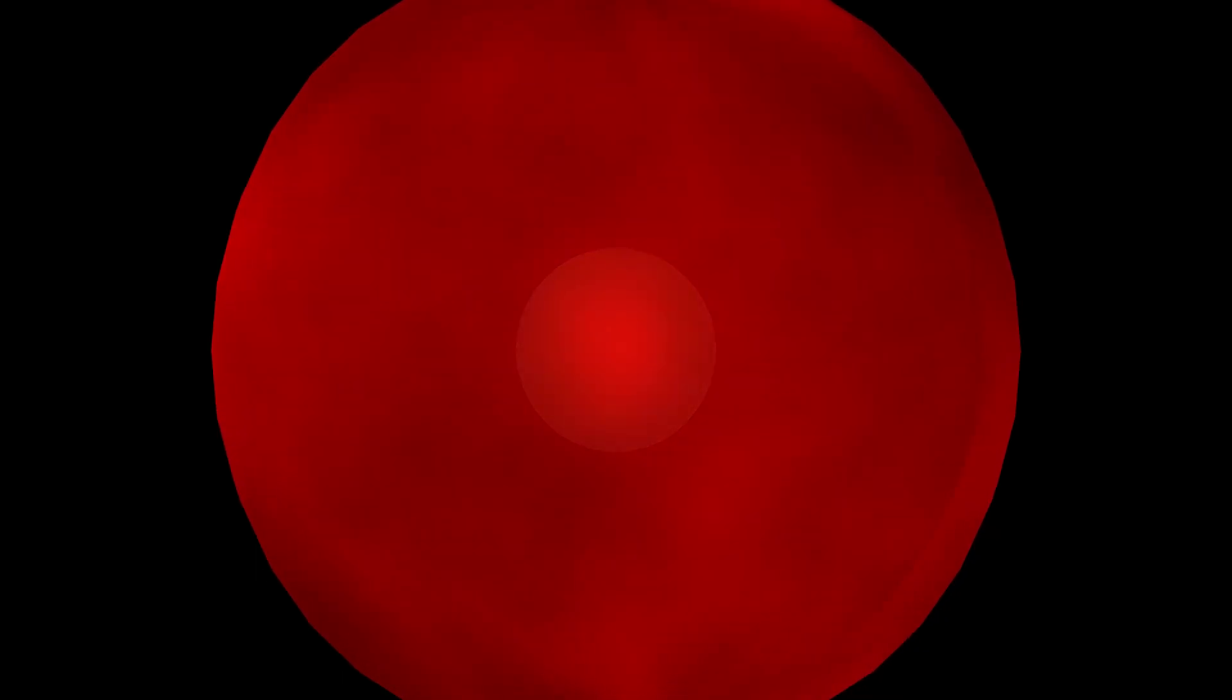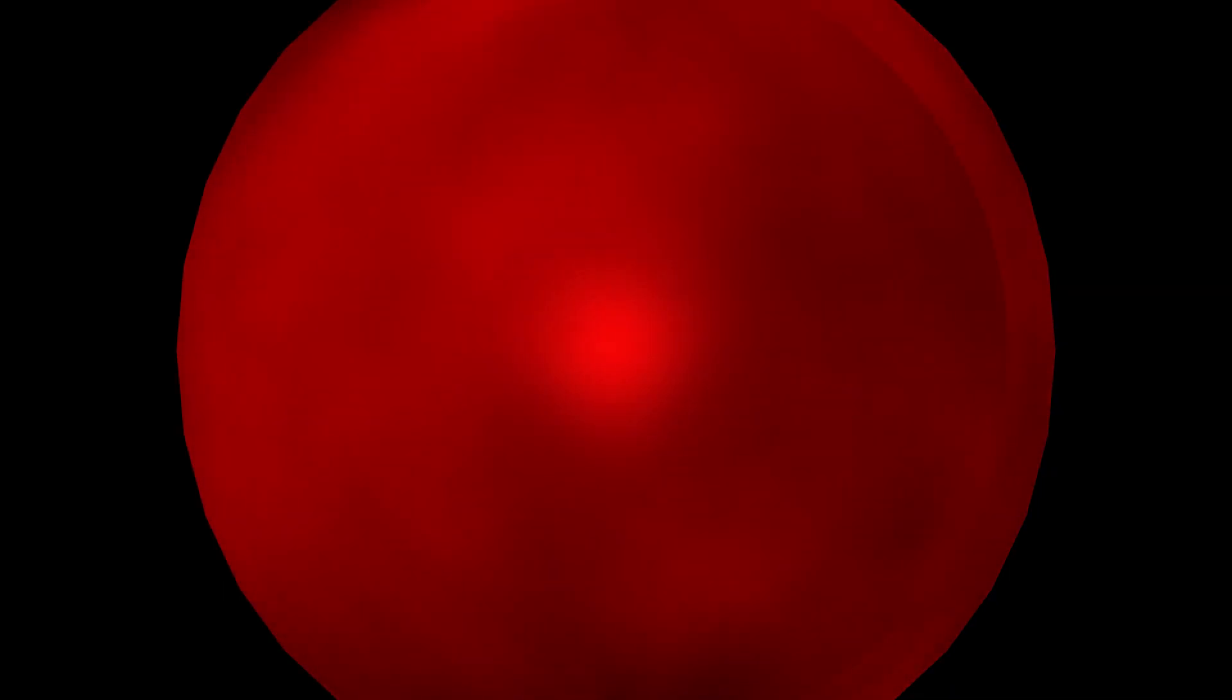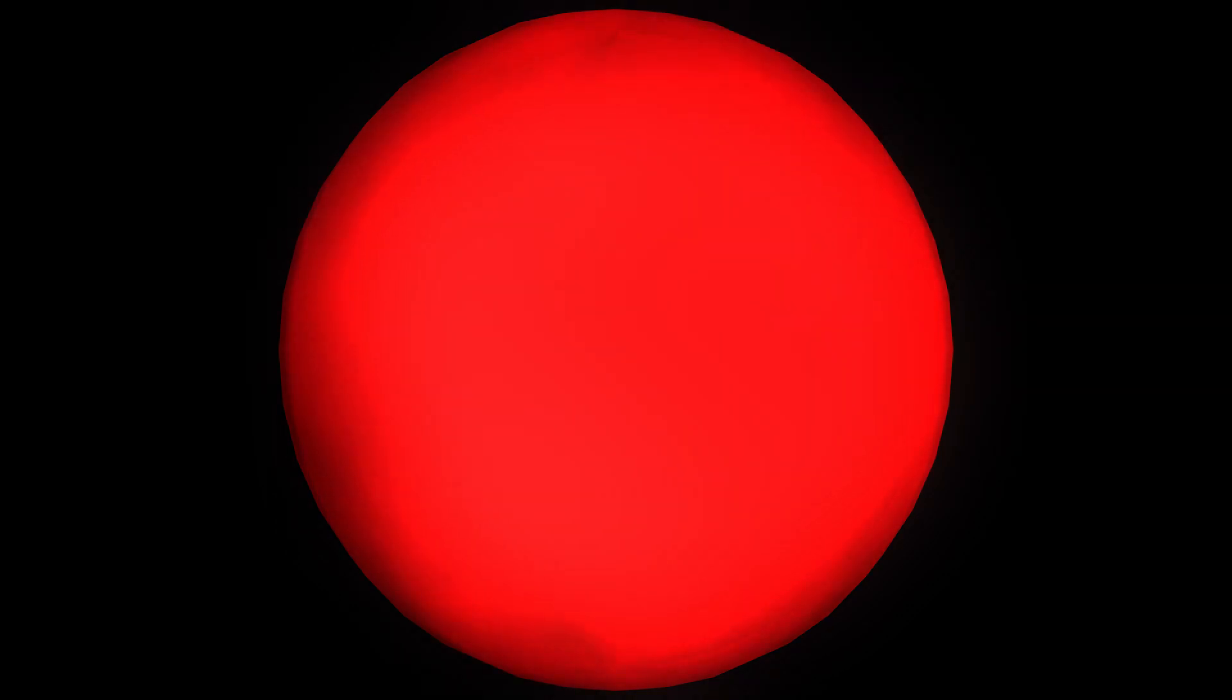Electric red giant stars are formed because they cannot satisfy their requirement for electrons from the surrounding plasma. So the star expands the surface area over which it collects electrons by growing a larger plasma sheath. As it does, the electric field starts to intensify and this causes more ionization to occur and the whole sheath starts to glow red.